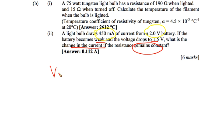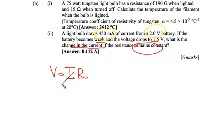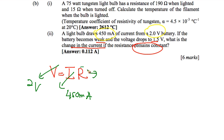Using Ohm's law, V = IR. From the first situation, when the light bulb draws 450 milliamperes and the voltage is 2 volt, you can find the resistance R = 4.44 ohm.